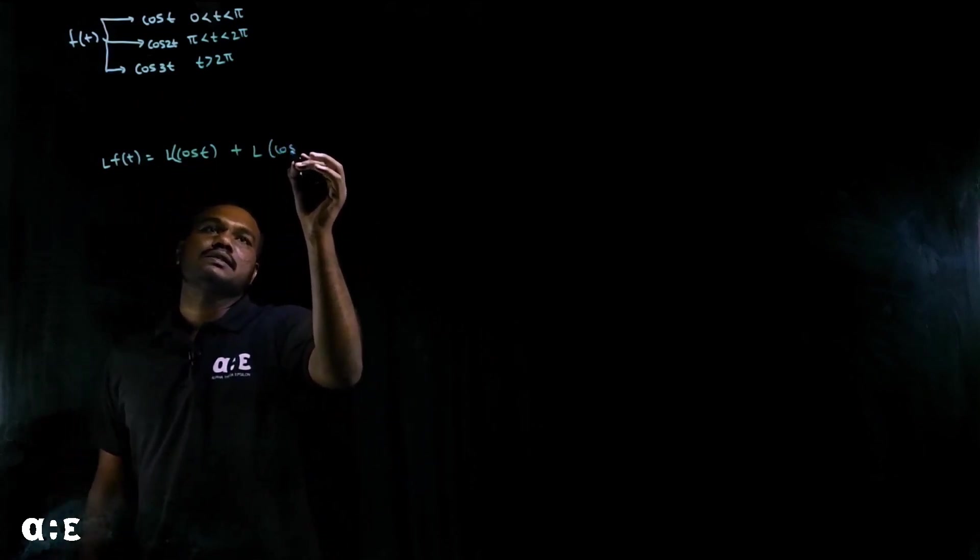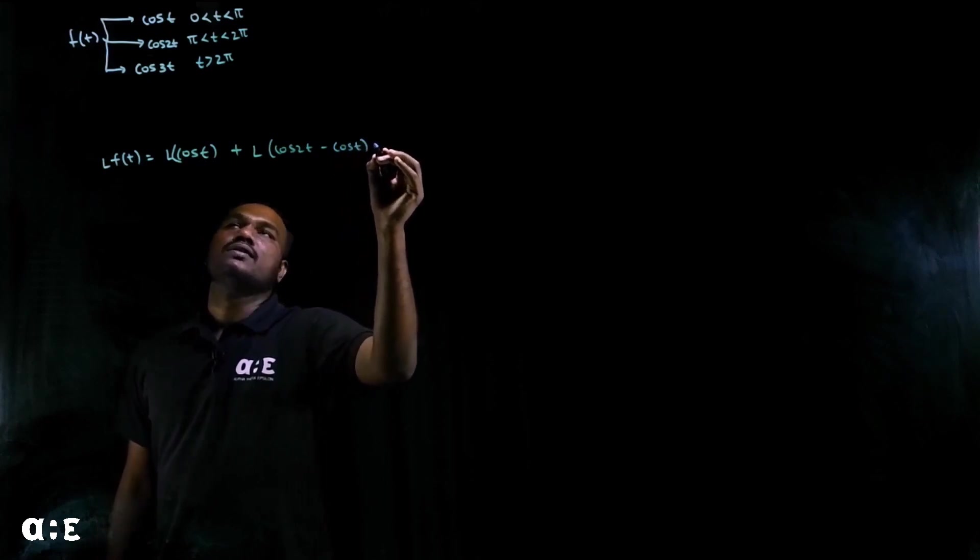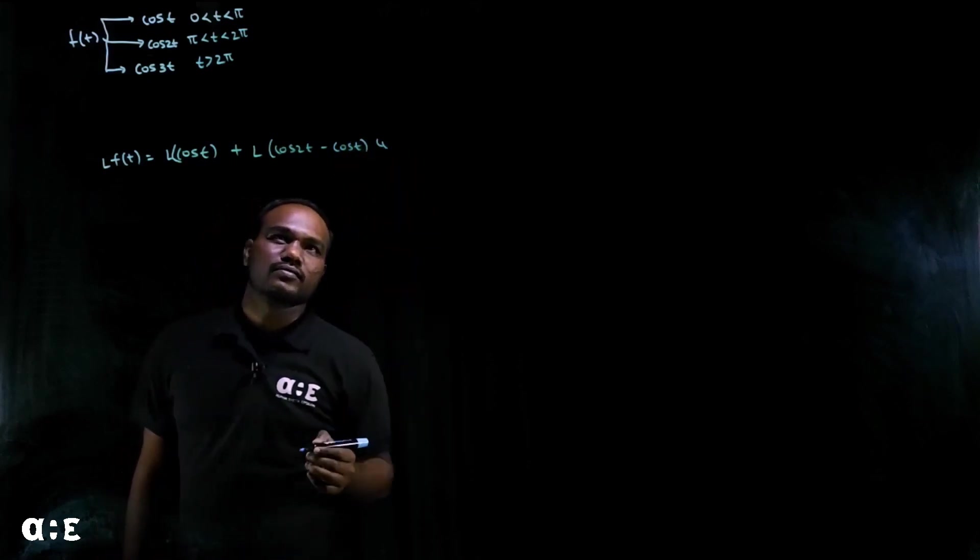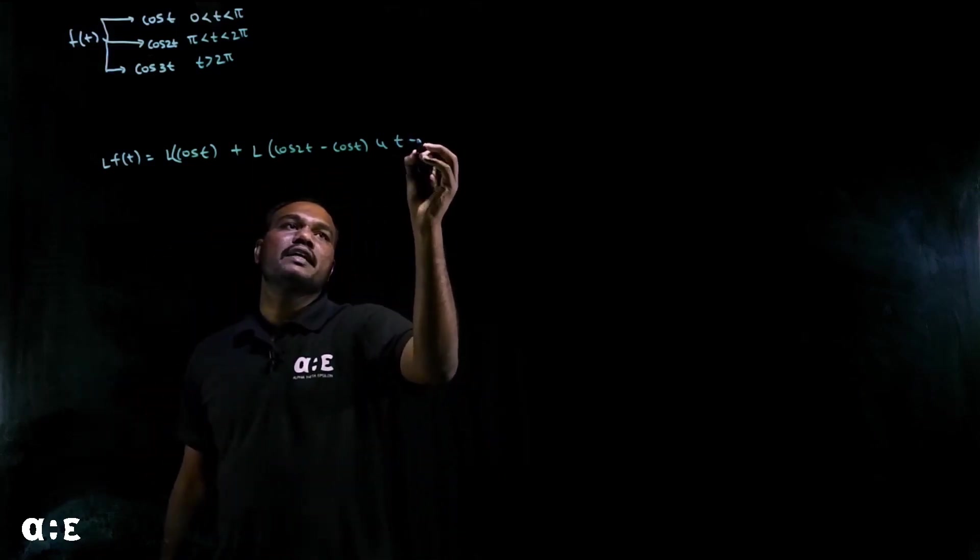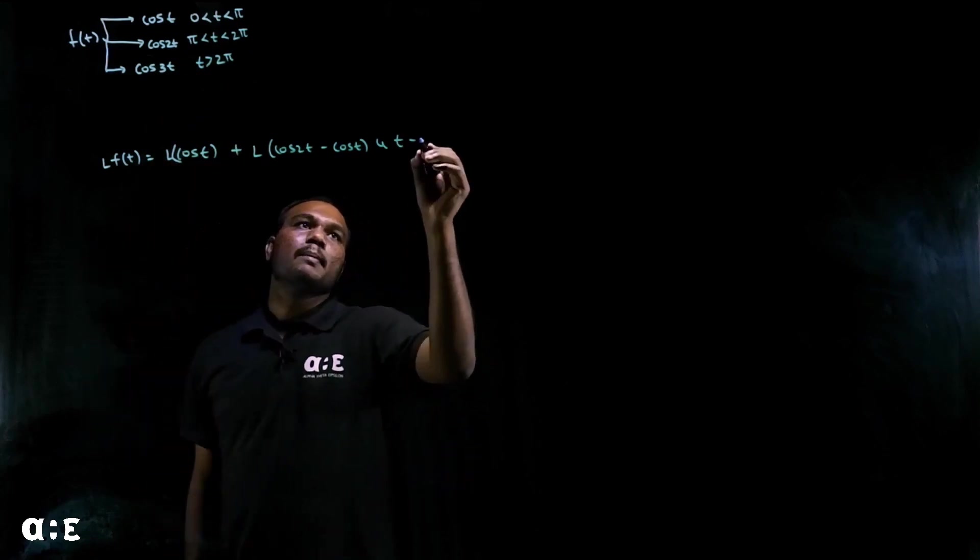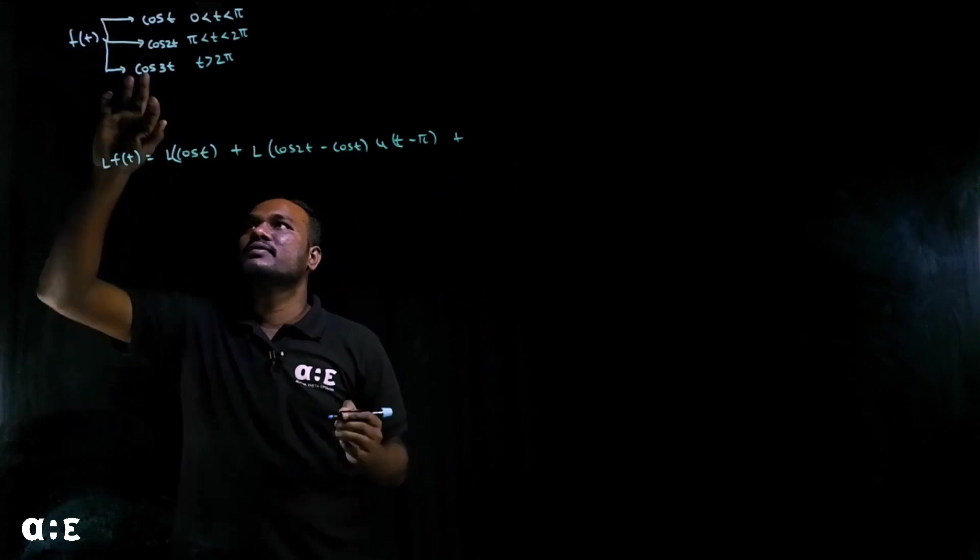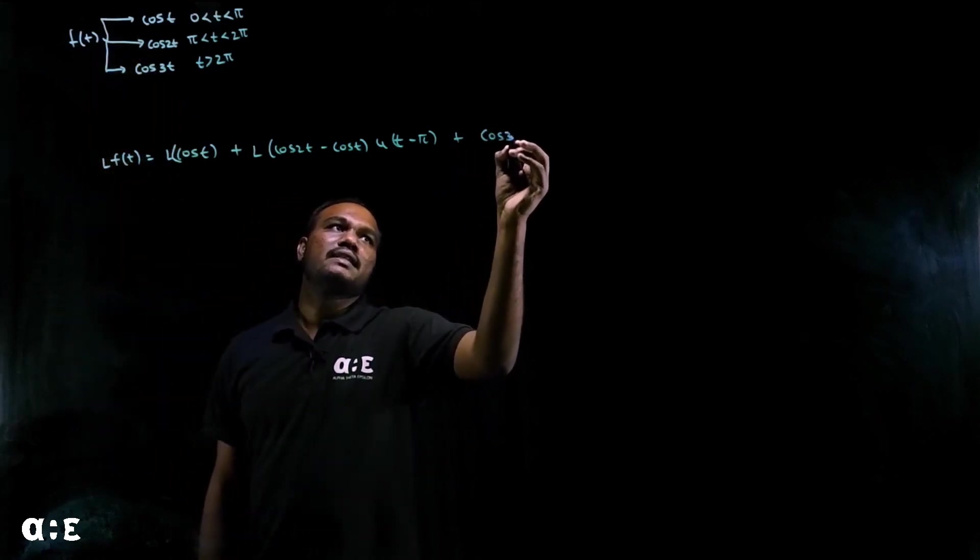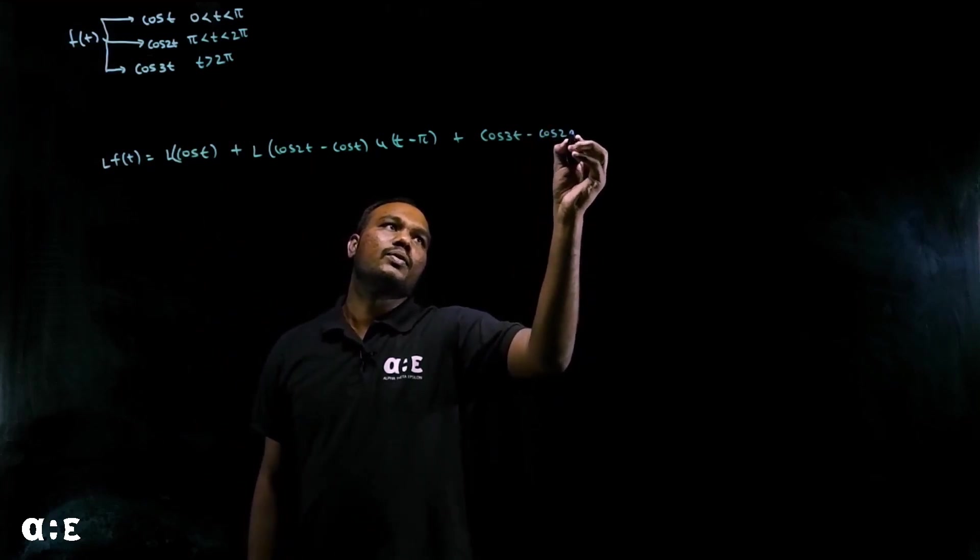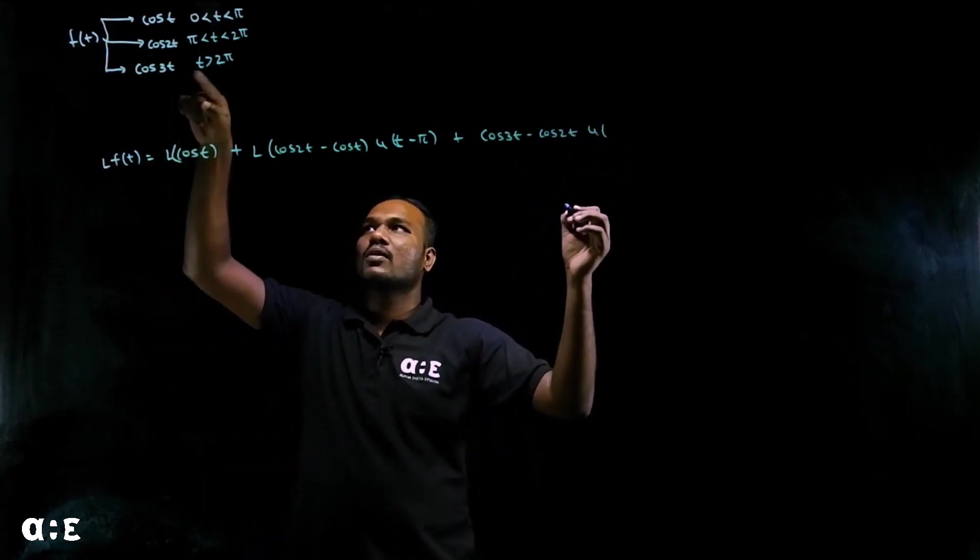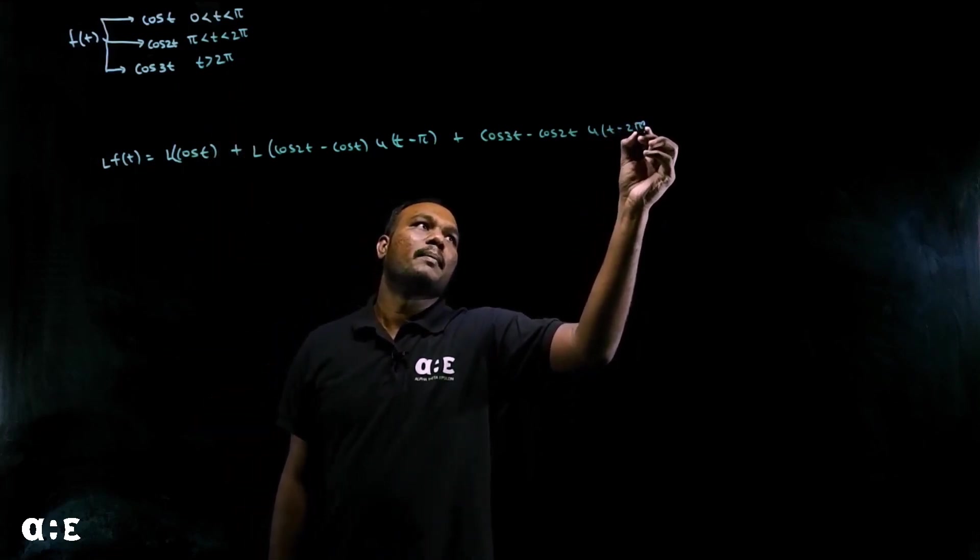We'll get cos 2t minus cos T, U(T minus pi). What is the common term? Pi, so just take pi here. Plus the third term, this minus this, so I need to take cos 3t minus cos 2t, U of T minus 2π.